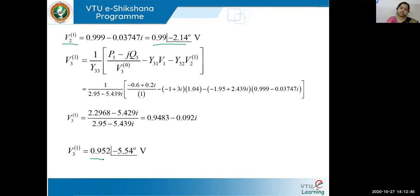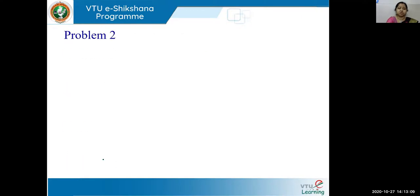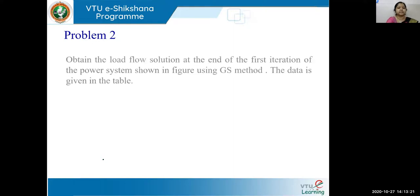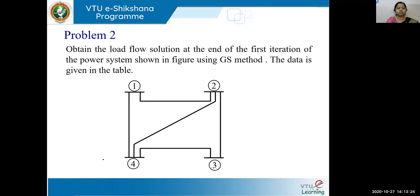Once the bus voltages are known, the next step in Gauss-Seidel is to find the change between the last two iteration values, called delta V. We calculate delta V2(1) and delta V3(1), then check if the maximum delta V is less than or equal to the tolerance. That is the convergence procedure. The second problem differs only in the form of the input data; the solution method and formulas remain the same.